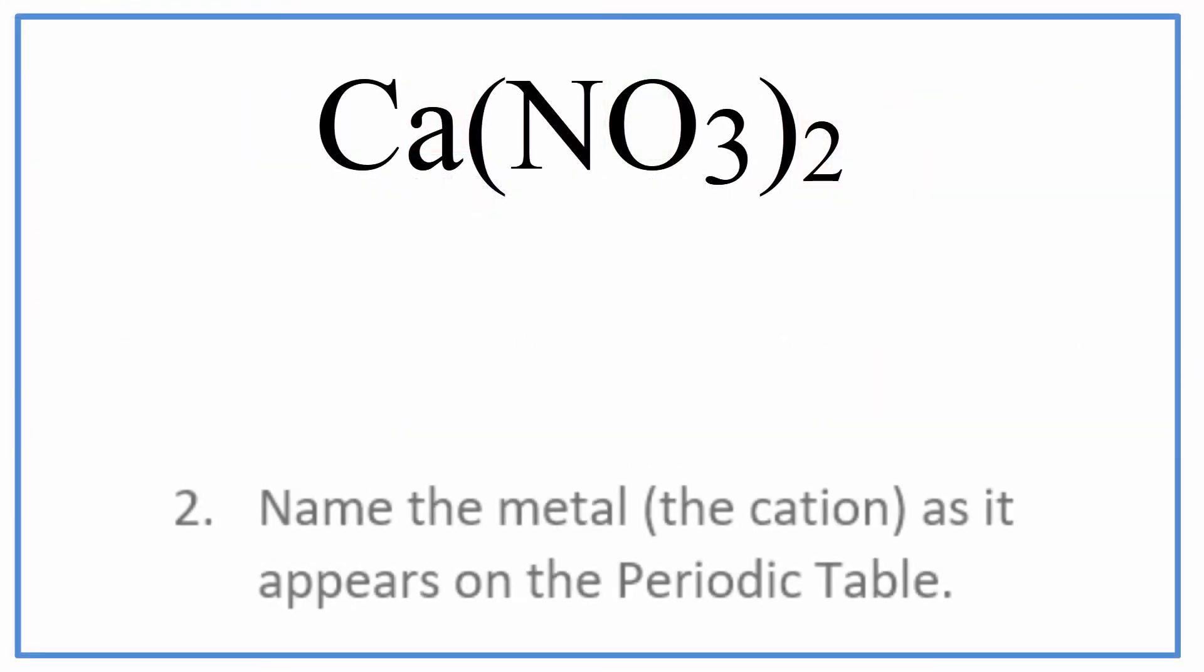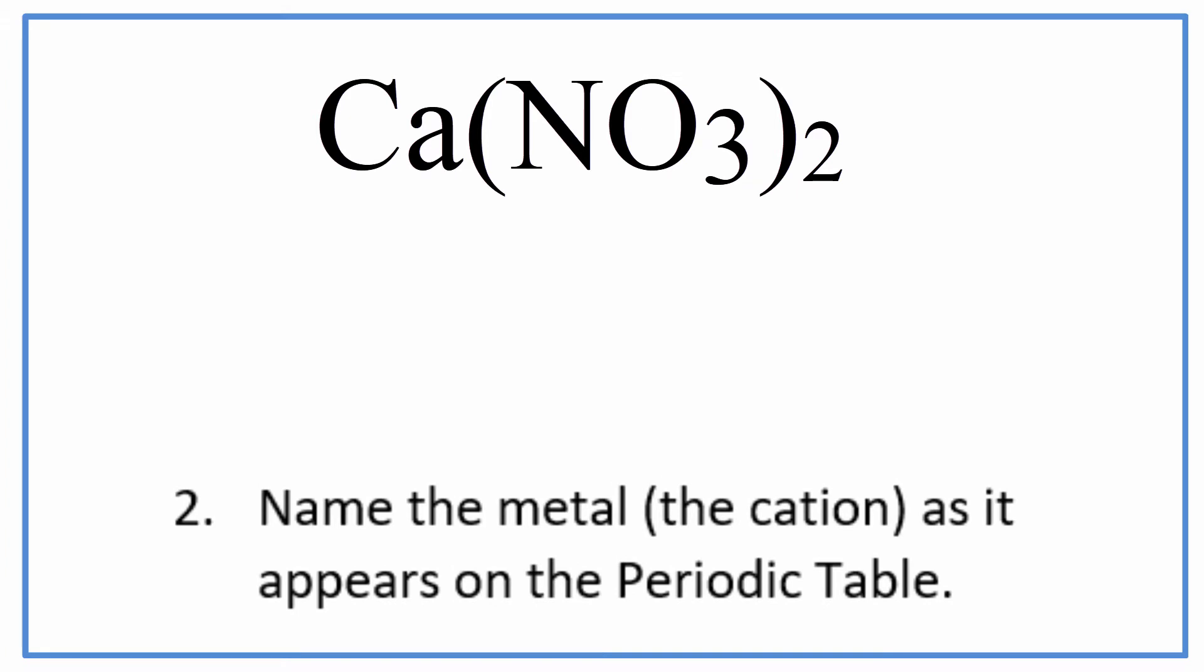Second, we're going to write the name of the metal using the periodic table. For Ca, it's calcium. We're using the name right off the periodic table.